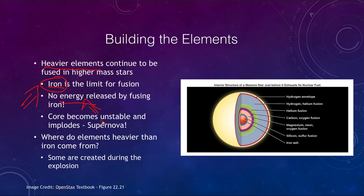The core eventually becomes unstable, implodes, collapses down, and then rebounds back outward as a supernova explosion. So we've produced elements up to iron. How do we get heavier than iron? Because iron is element number 26 in the periodic table, and we know that there are 92 naturally occurring elements. So where do the rest of them come from?